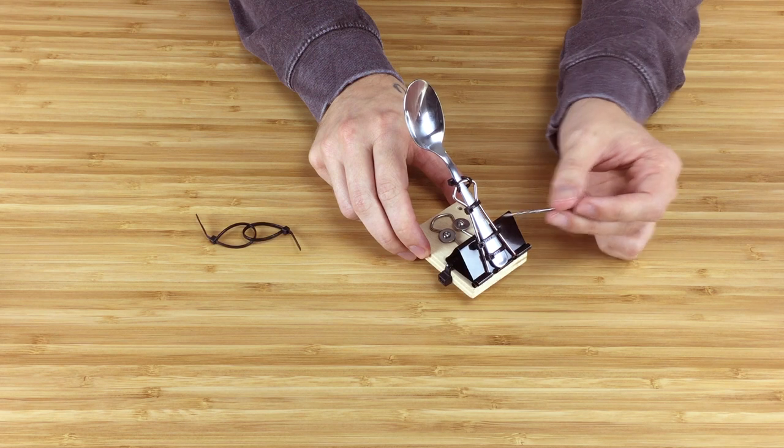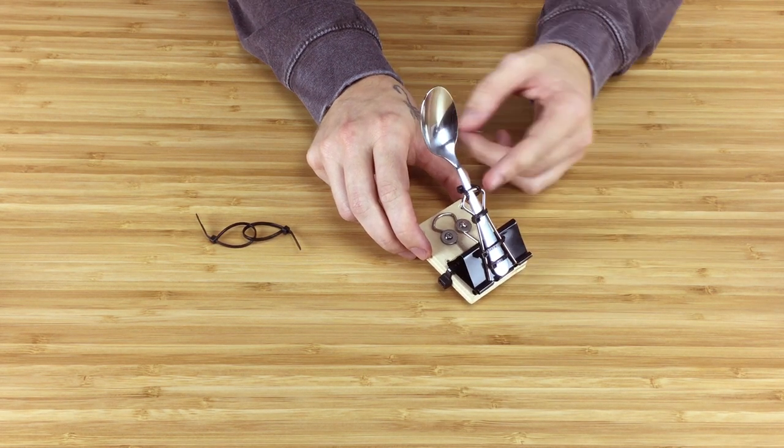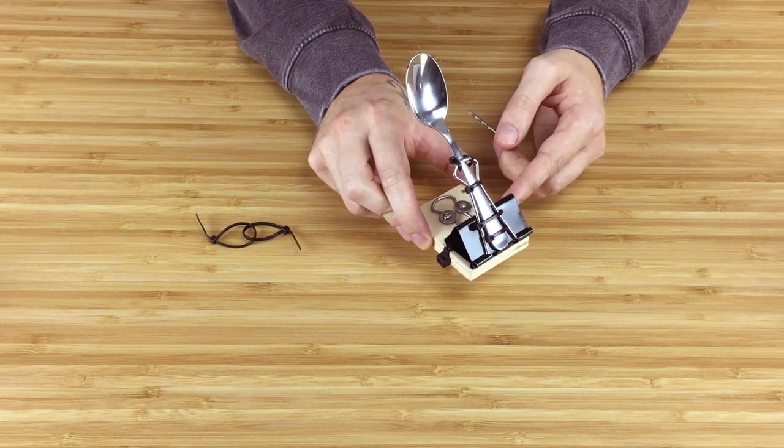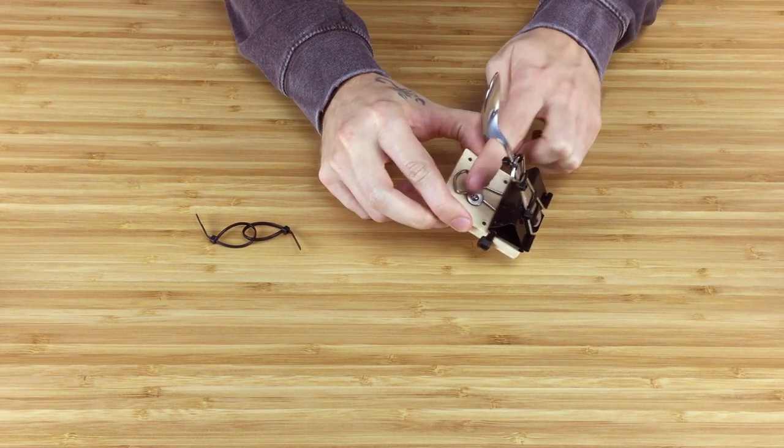We made some holes in the binder clip, so we can attach a couple of zip ties to hold the spoon. With a few more, we can also hold the top part. We'll lock the binder clip to the small wood piece with a larger zip tie. We use some screws and washers to hold them back.